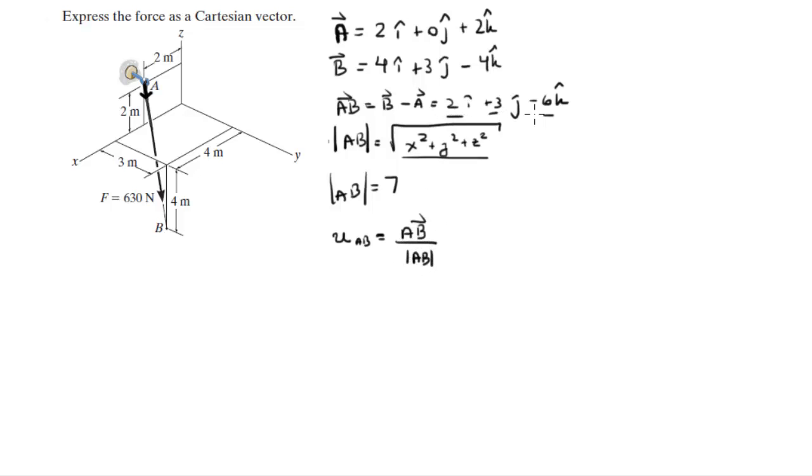You divide each of these values by 7 to get the unit vector, which is 0.286i plus 0.429j minus 0.857k.